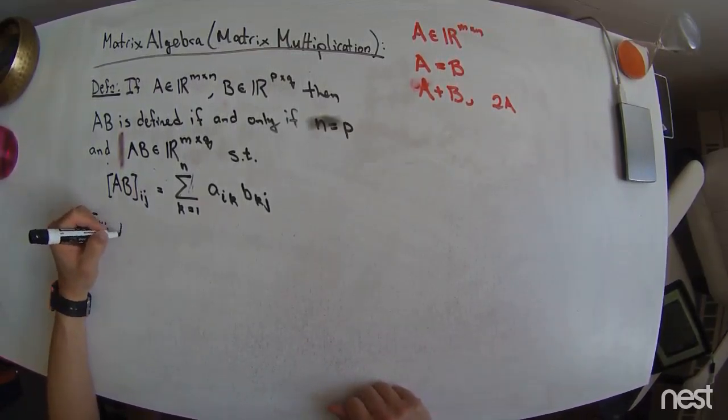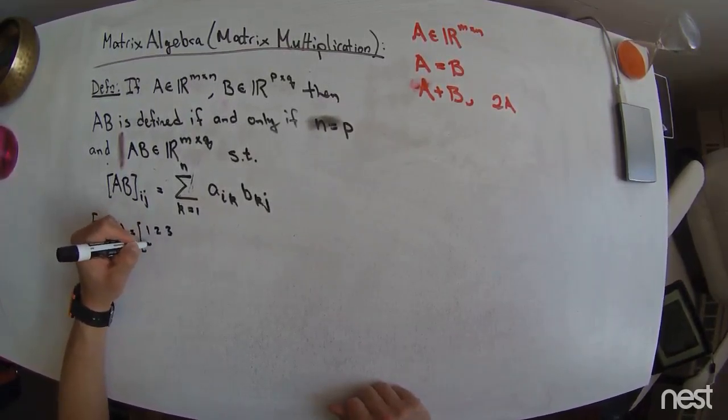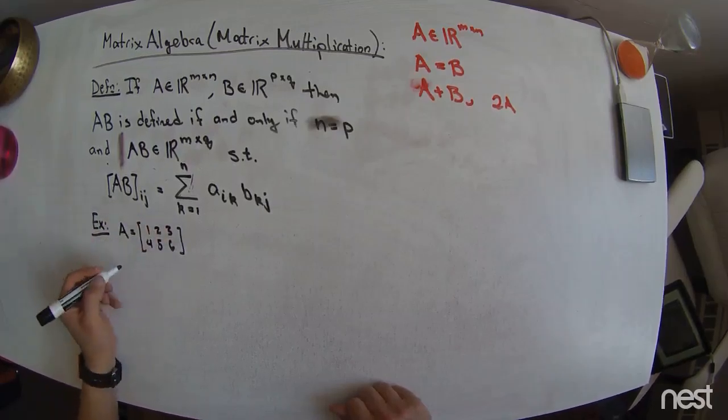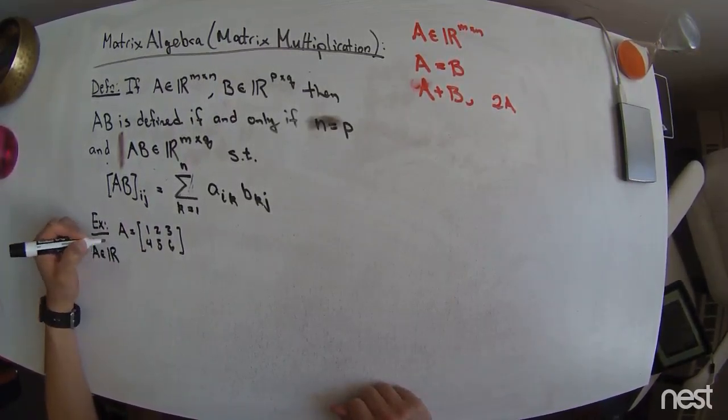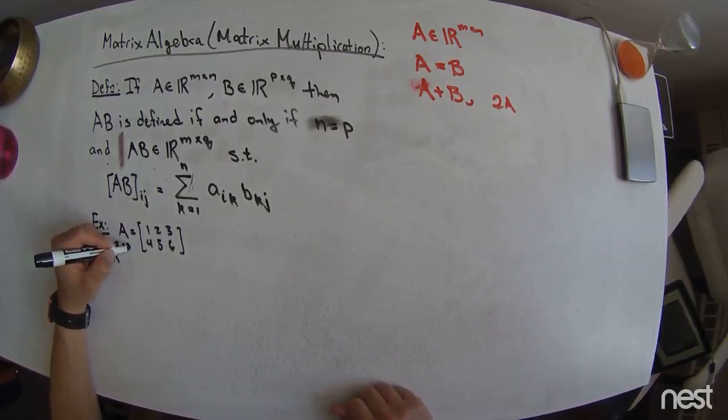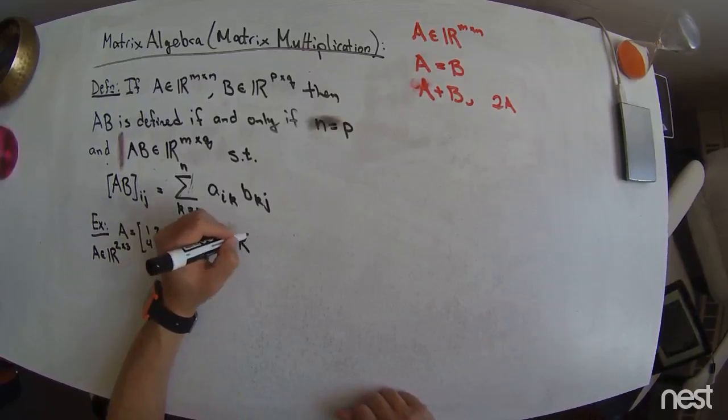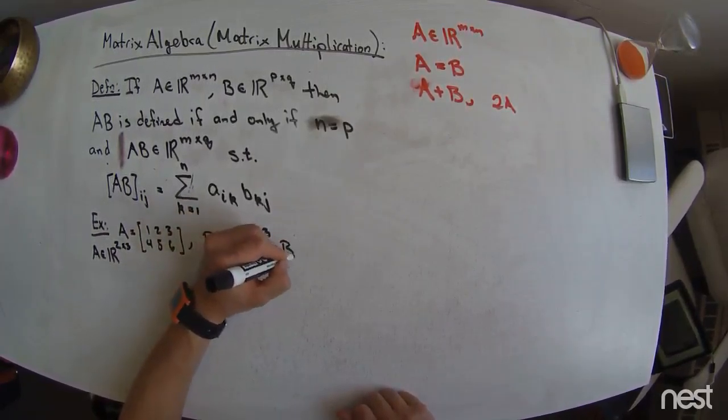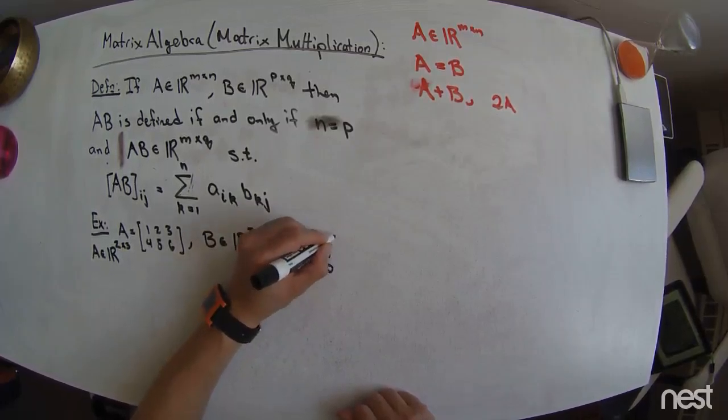Example, let's say I have the A matrix, which is 1, 2, 3, 4, 5, and 6. So A is in R, 2 rows, and 3 columns, and let's say the B matrix was in R, 2 by 3, and looked like B was equal to 1, 2, 0, 1, 1, 0.